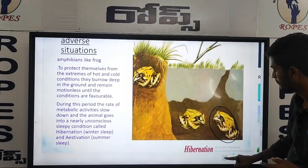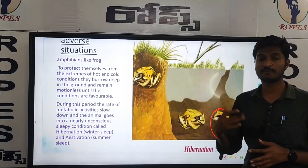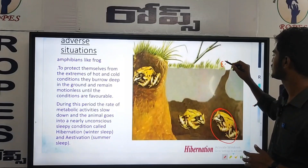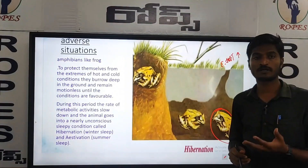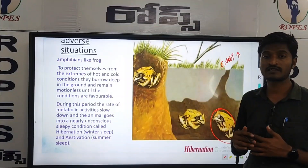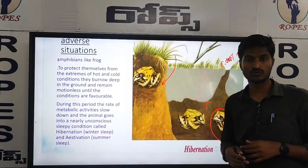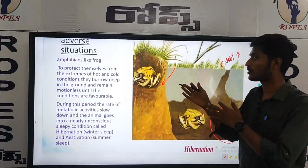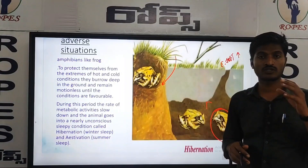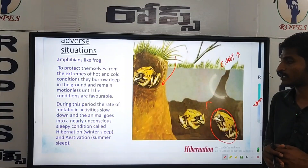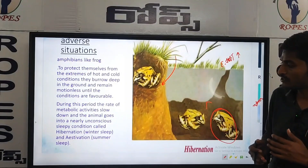Frogs face extreme hot conditions — extreme meaning very high temperature conditions. Because of reactions in the atmosphere, frogs hide in the ground. During this period, the rate of metabolic activity slows down and the animal goes into a nearly unconscious sleep condition called hibernation, or winter sleep.